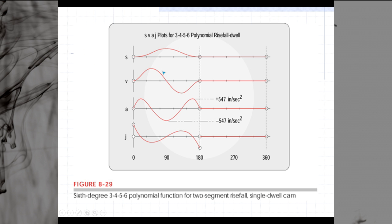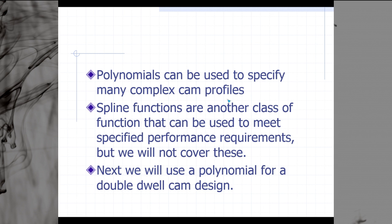If we plot those results, we'll see that we do indeed have a polynomial which takes our position from 0 to 2, and then back down to 0 in 180 degrees. We see our velocity curve, our acceleration, and our jerk. You may recall that if we look at our maximum acceleration, it is lower than it was previously for either our double harmonic or our cycloidal. This is a very nice result for our polynomial cam design.